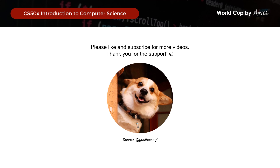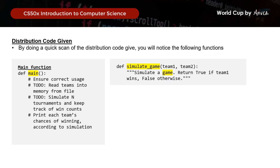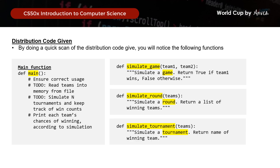Let's look at the distribution code that we are given and what we need to work on. By doing a quick scan, we can see that there are four sections: the main function, followed by three functions — simulate_game, which pits two teams against each other and returns true if team 1 wins; simulate_round, which simulates a round and returns a list of winning teams; and lastly simulate_tournament, which returns the name of the overall winning team.